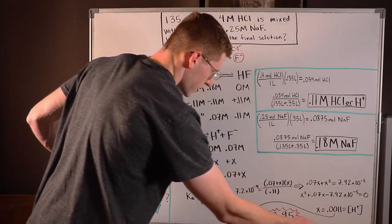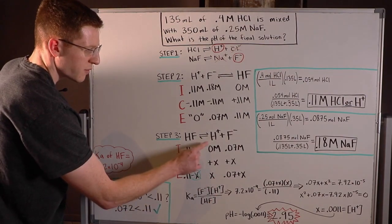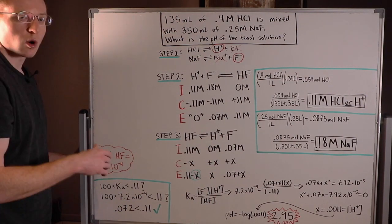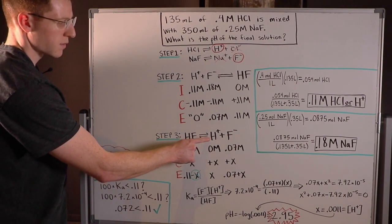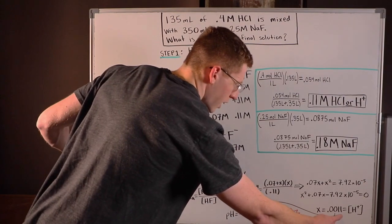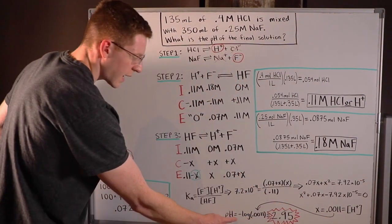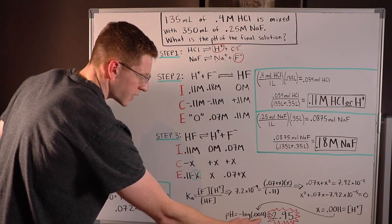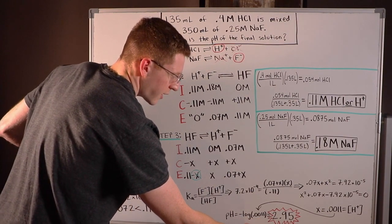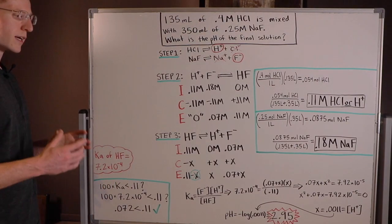And why this X is important is because it tells you the final concentration of H plus. The H plus here is what is ultimately going to determine the pH of the solution. So really, we need this X. And that's what we got, 0.011. Now we can say pH equals the negative log of the H plus concentration, or 0.011. And we can say the final pH must have been 2.95.